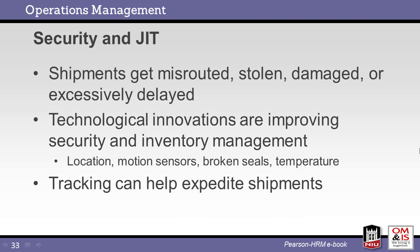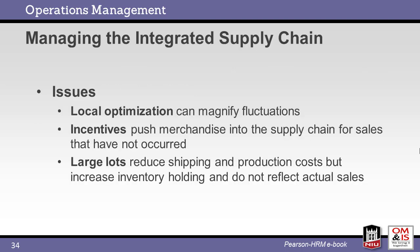Technology is enhancing the ability to secure global shipments. Barcode and RFID scanning linked to global IT systems facilitate near-real-time tracking. This data is used to optimize processes and identify security gaps. Supply chain issues include local optimization where each member of the supply chain focuses internally, adding safety stock to address perceived variability. Incentives can encourage suppliers to overproduce, and large lots that minimize shipping and production costs may also add excess inventory to the pipeline.